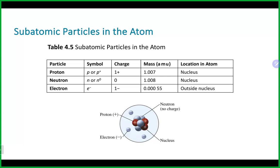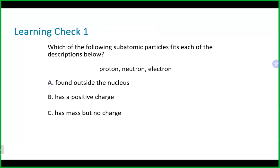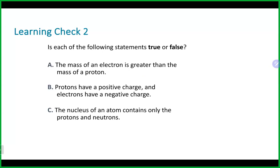Quick check: what is found outside the nucleus? The electron. What has a positive charge? The proton. What has mass but no charge? The neutron. True or false: the mass of an electron is greater than the mass of a proton — that is false; the electron is the lightest. Protons have positive charge, electrons have negative charge — true. The nucleus contains protons and neutrons — true.